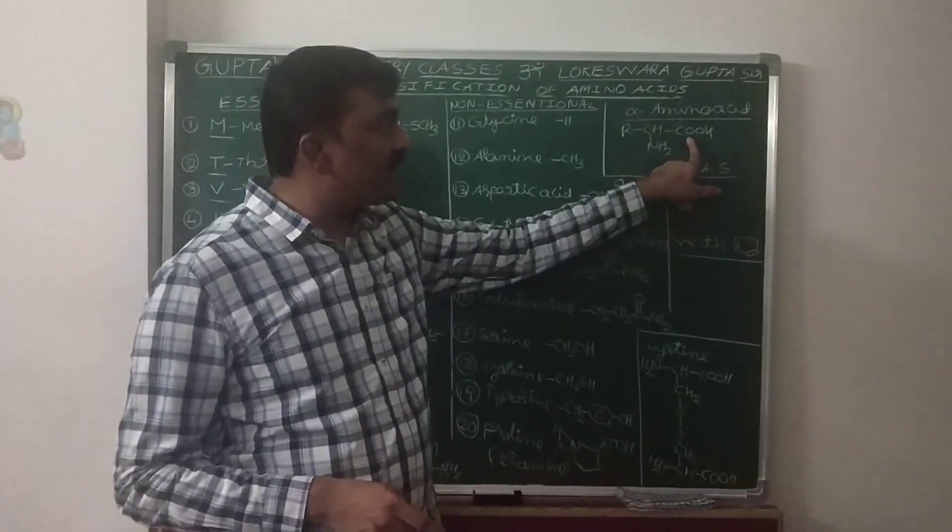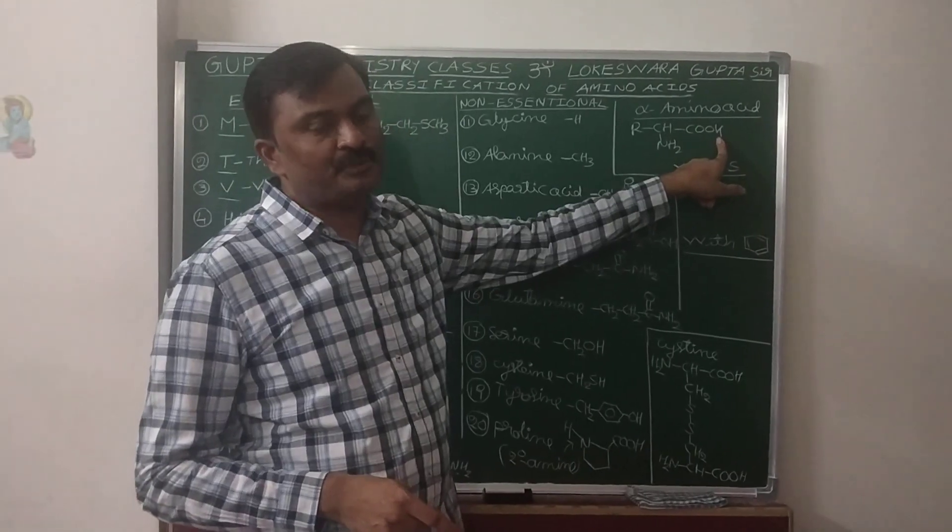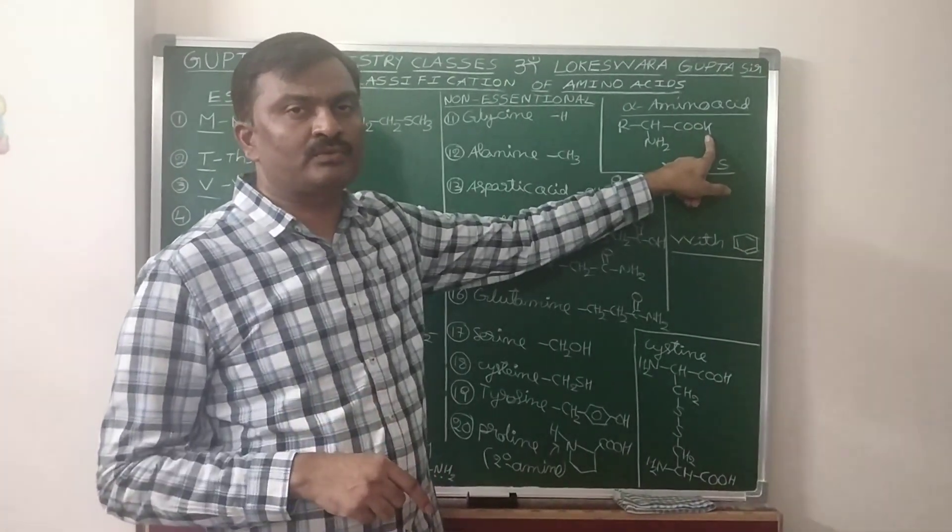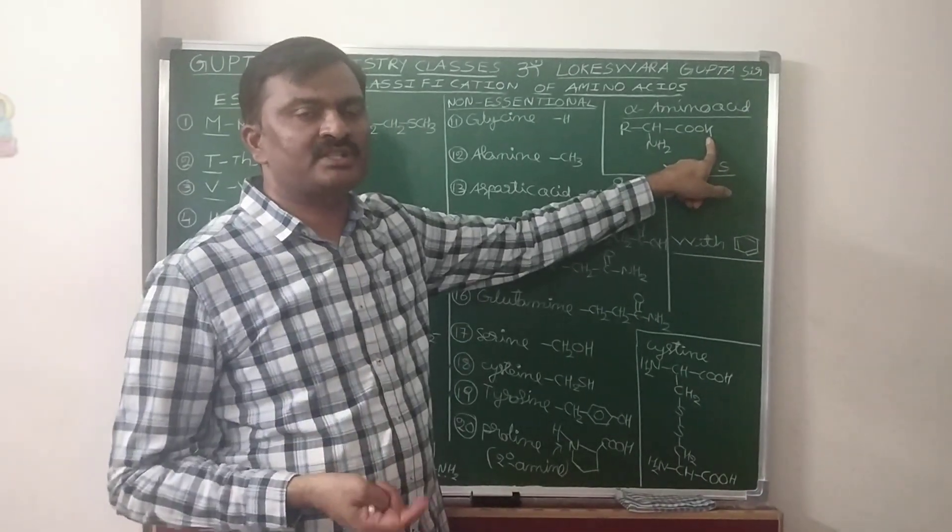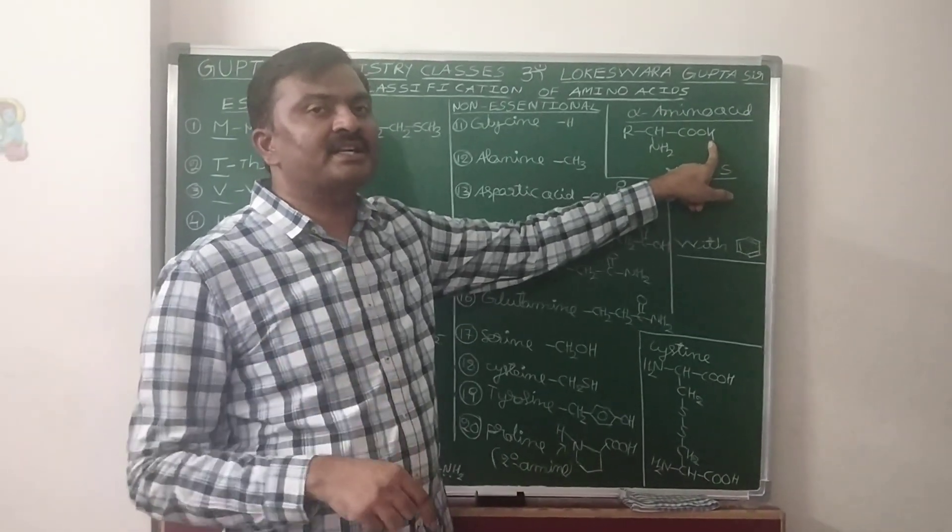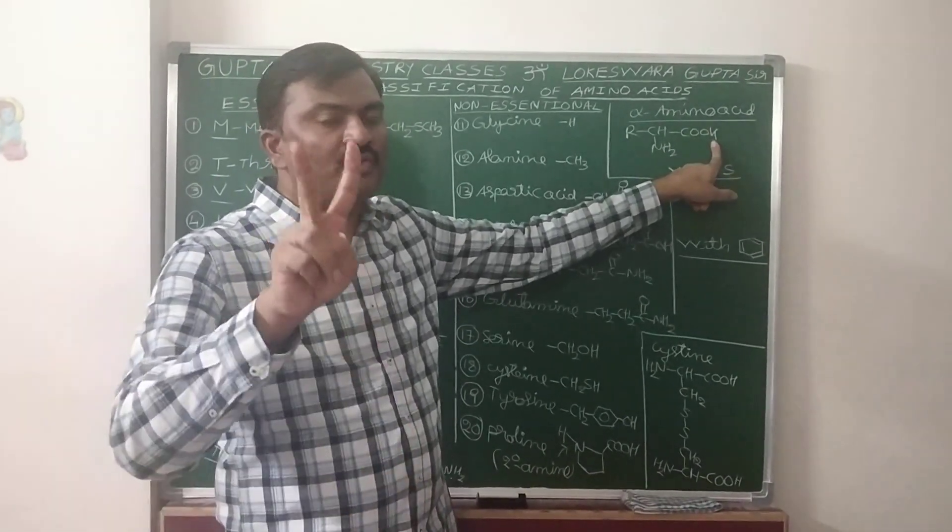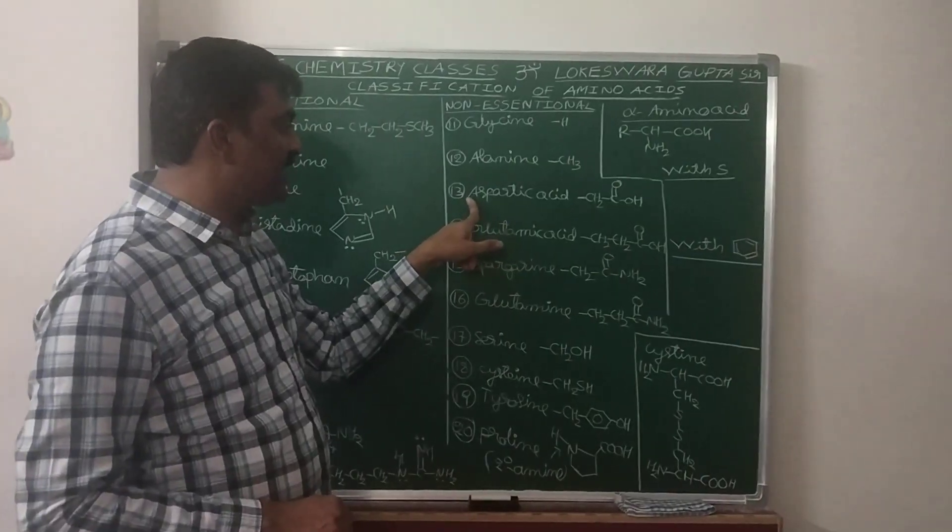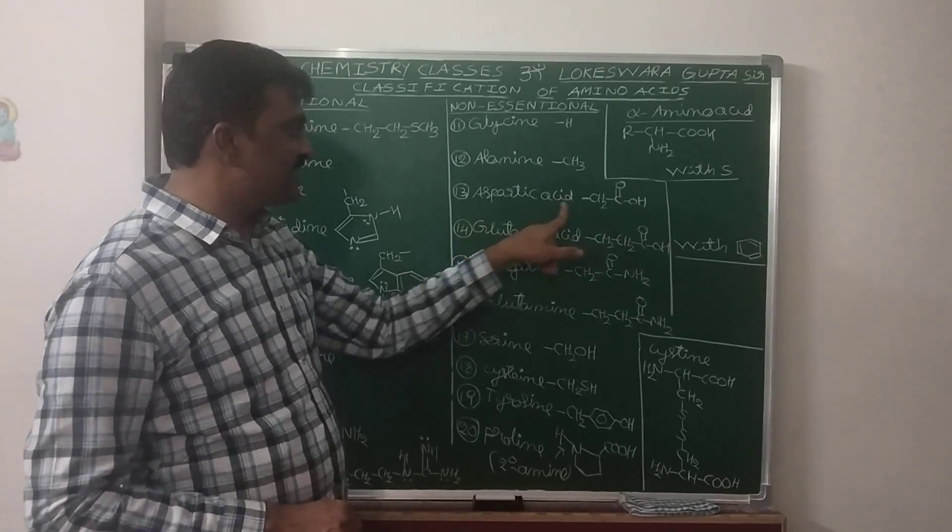If more number of carboxylic acid functional groups present than the basic NH2, more number of COOH, then that is called acidic alpha amino acid. Only two acidic alpha amino acids are there. What are they? Aspartic acid, Glutamic acid.